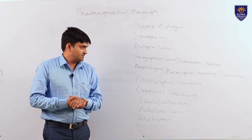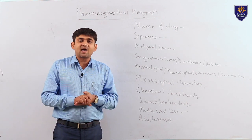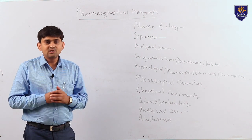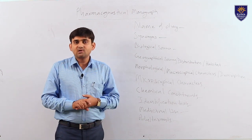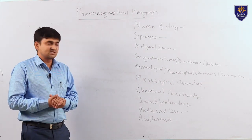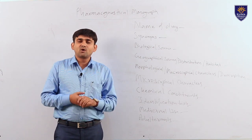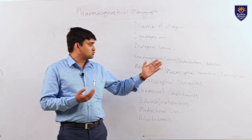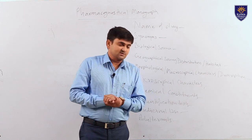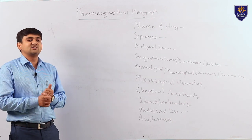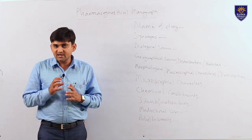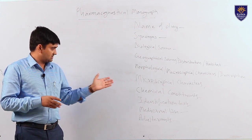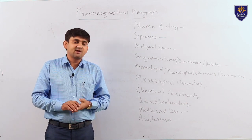The third point is geographical source, distribution, or habitat. This covers the distribution and habitat from where we can obtain the crude drug and maintain supply to the herbal industry in proper time. Then morphological characters or description, where we give morphological characters by which we can identify the drug with the naked eye. Next, microscopical characters discuss various cellular and tissue arrangements of the drug to confirm proper identification, studying transverse section, longitudinal section, and various cell constants like palisade ratio, stomatal index, and stomatal number.